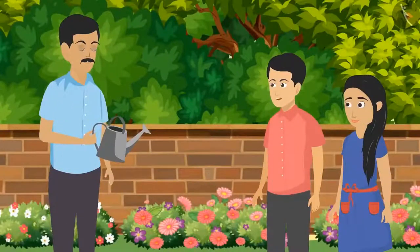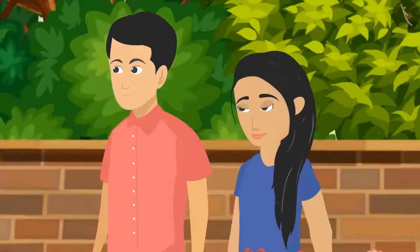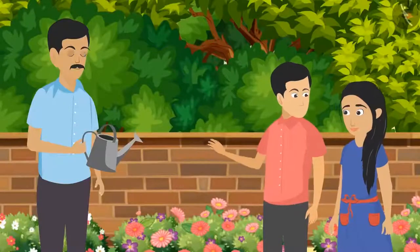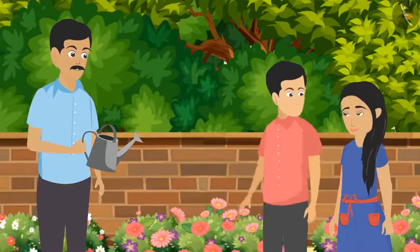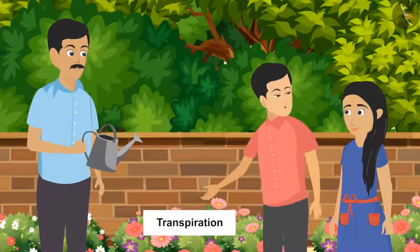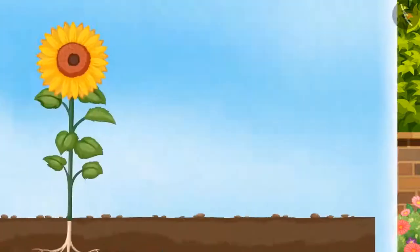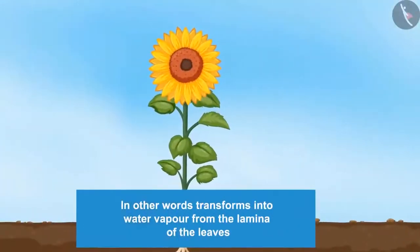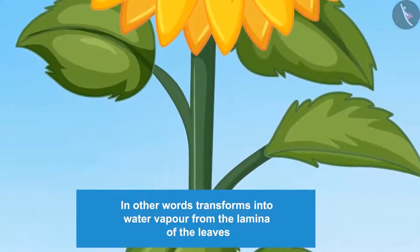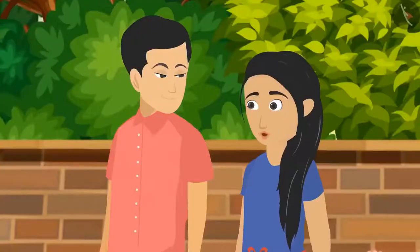Making food in the leaves is the most important task of a plant. Leaves also perform another important task called transpiration — the excess water of the plant gets evaporated, transforming into water vapor from the lamina of the leaves. The lamina is the broad green part of the leaf.